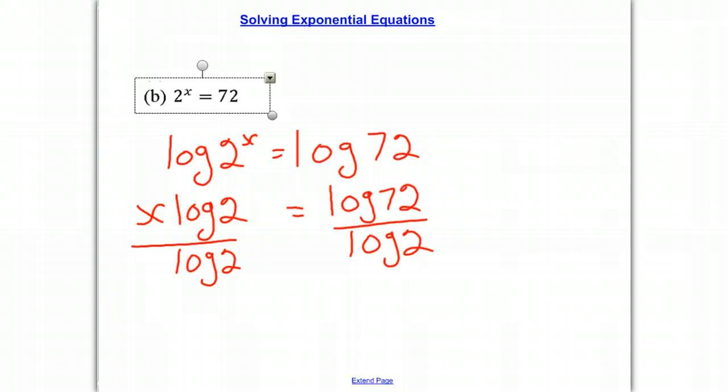And these two log base 2s cancel out. And then we use our calculator to calculate the log of 72 divided by the log of 2, which is equal to 6.17. And we have our answer.